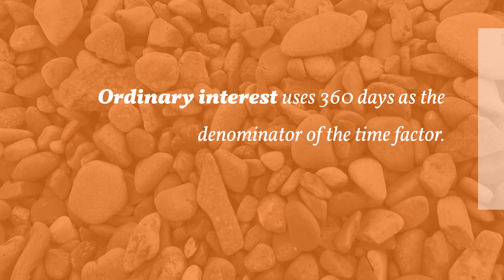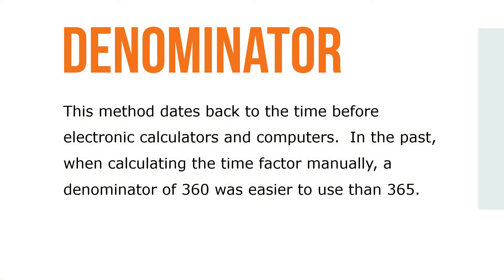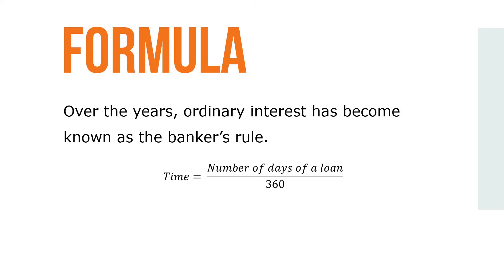Ordinary interest uses 360 days as the denominator of the time factor. This method dates back to the time before electronic calculators and computers. In the past, when calculating the time factor manually, a denominator of 360 was easier to use than 365. Over the years, ordinary interest has become known as the banker's rule, where time equals the number of days of a loan over 360.